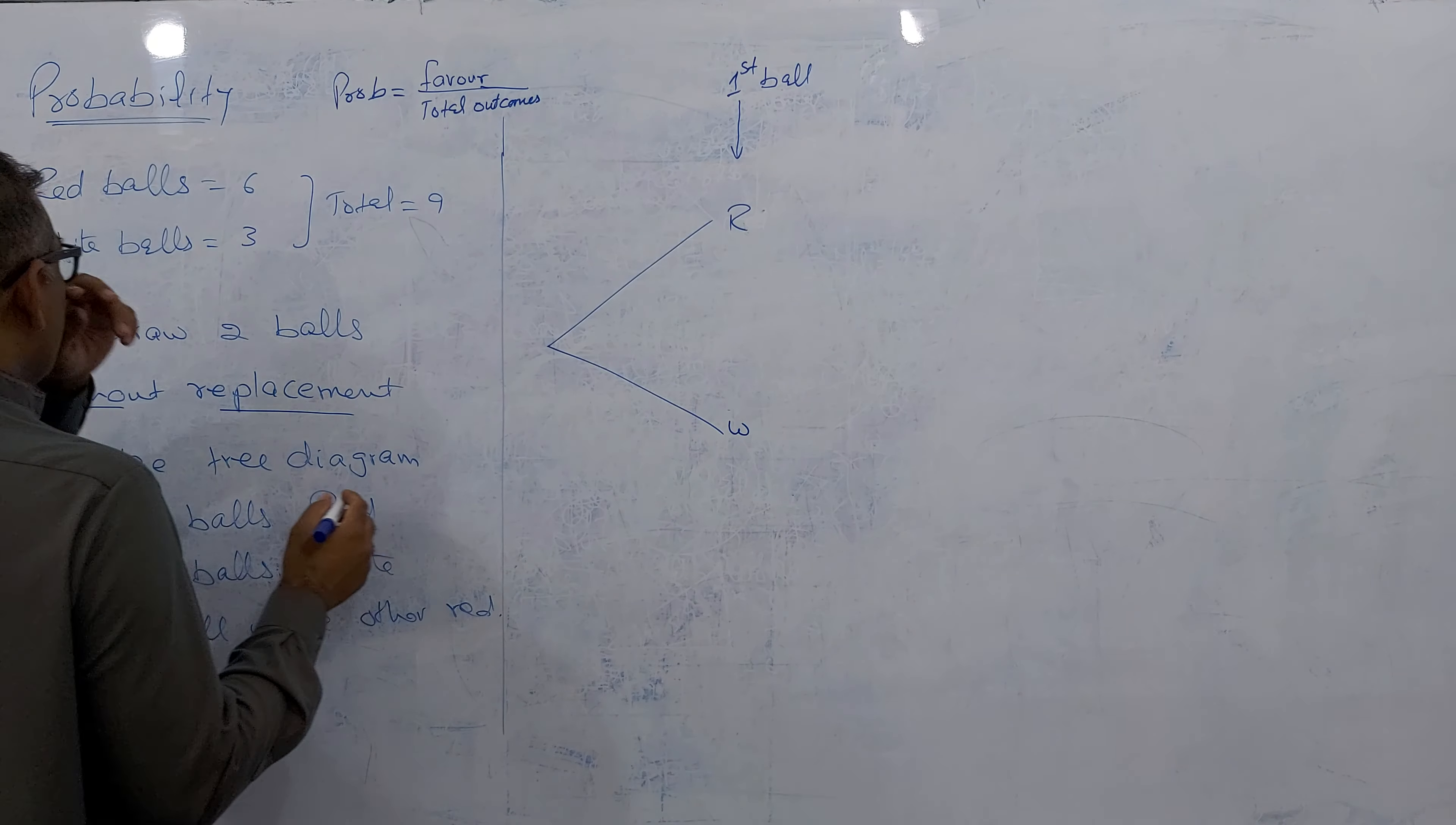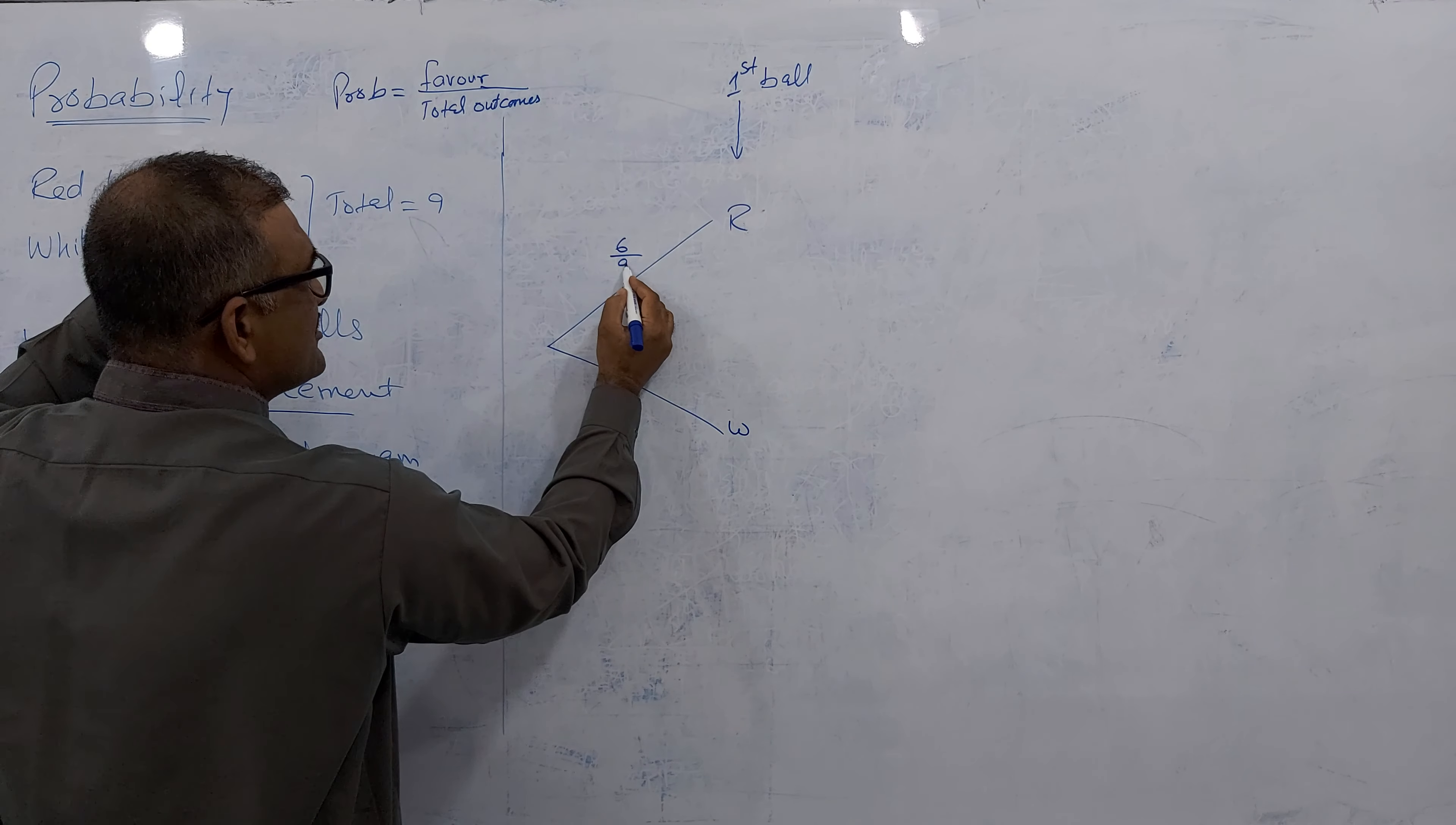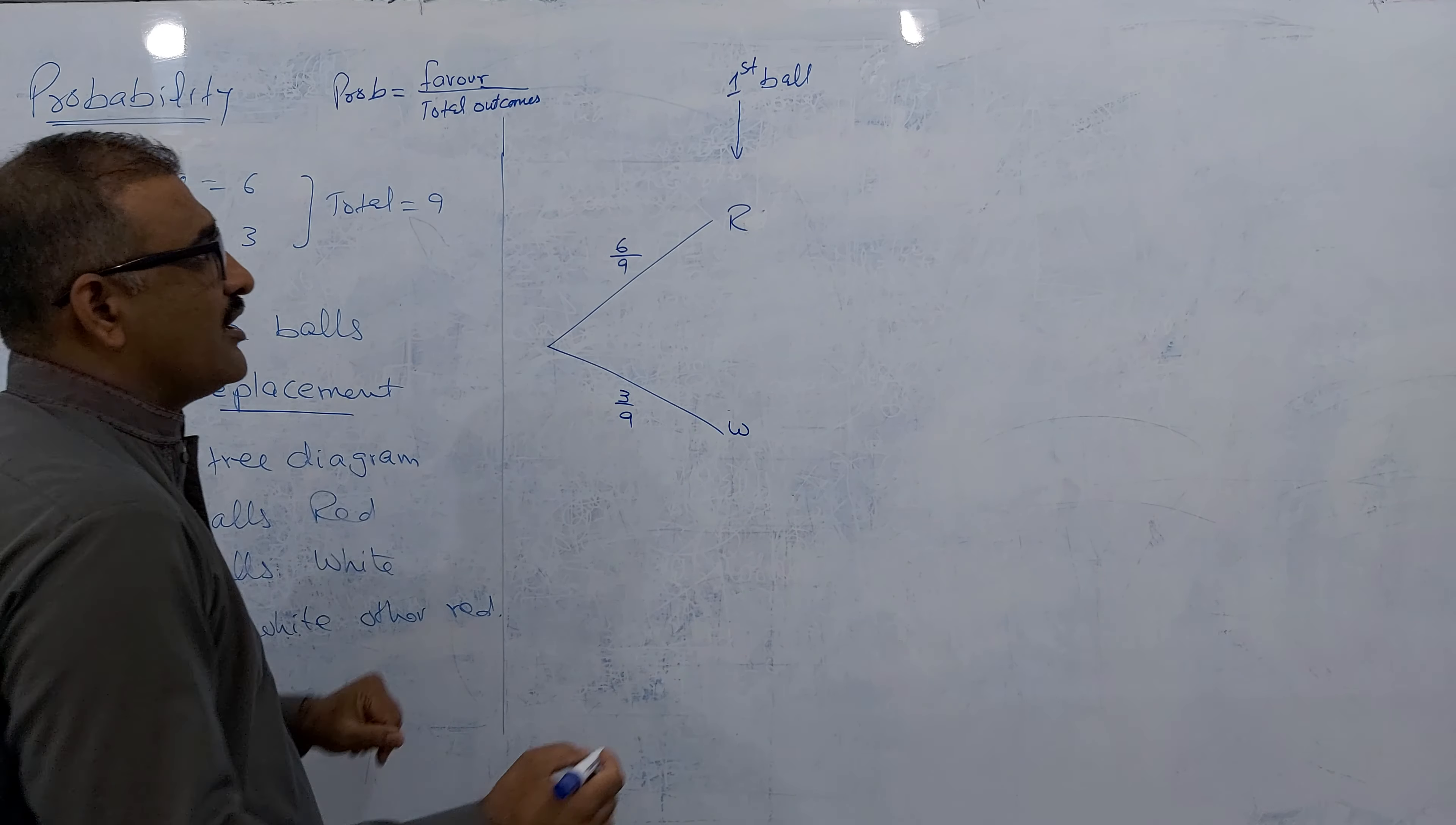What is the chance of red? Because red is favored, my demand is favored. So 6 up and total is 9. 6 up, 9 down. And don't simplify here. Don't can simplify here. And how to find this branch? White is 3 and total 9, so 3 by 9. This is a basic thing.